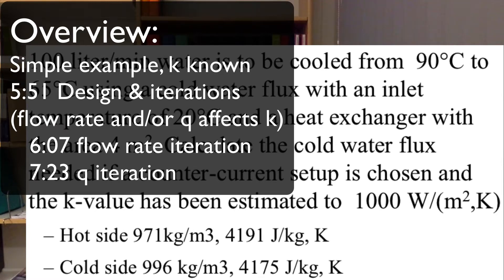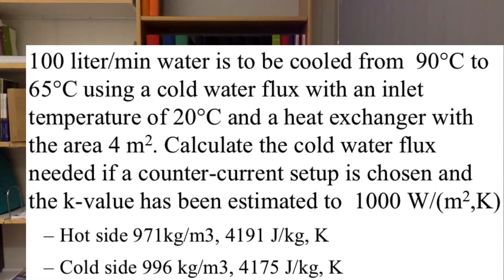So let's do this example. 100 liters of water per minute is to be cooled down from 90 to 65 degrees Celsius using a cold water flux with an inlet temperature of 20 degrees with a heat exchanger with the area of 4 square meters.